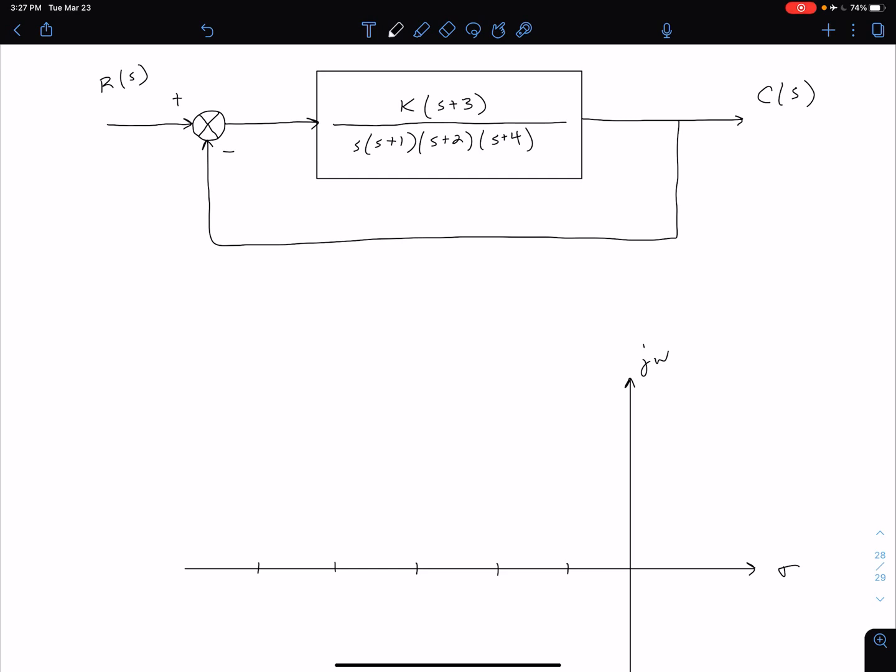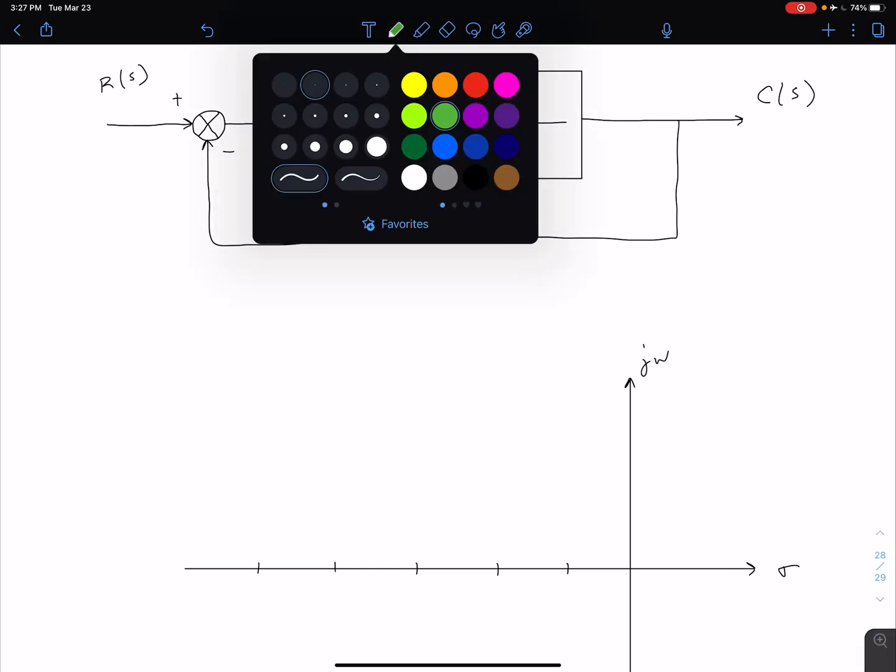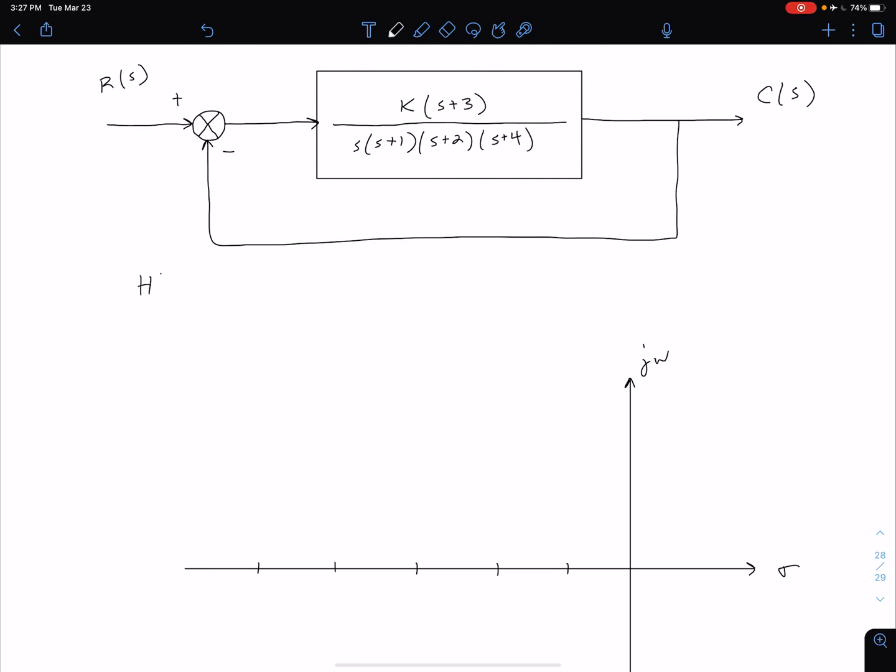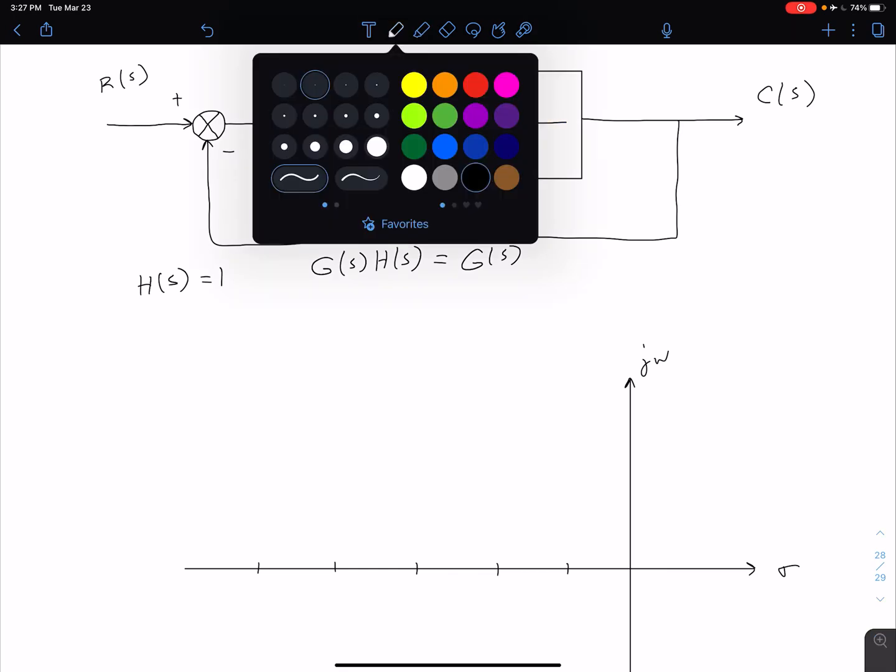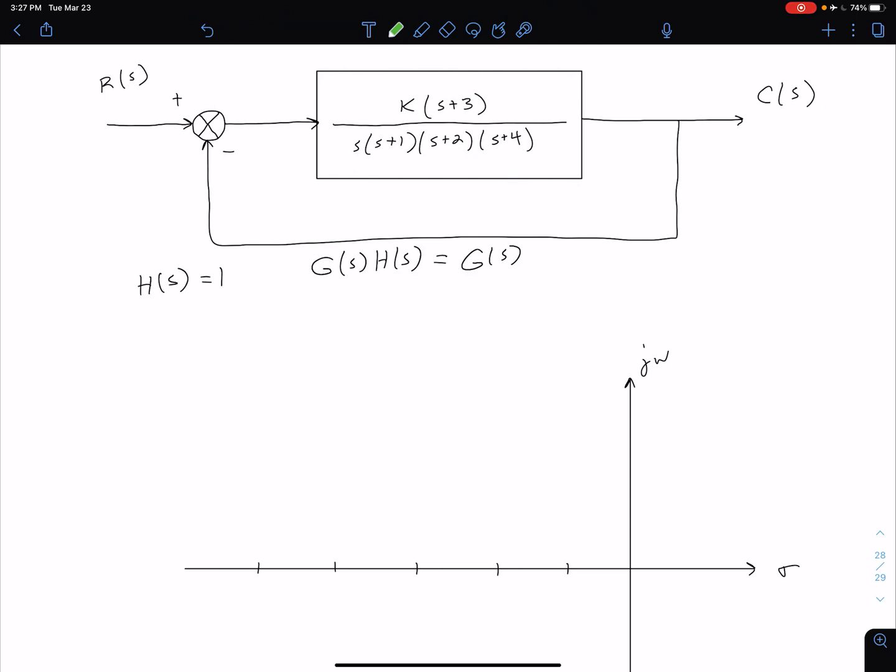What we see is we have one zero of our open loop function. Let me go back here to black. We have a unity feedback system, so H(s) is equal to 1. That means our open loop transfer function, which is G(s)H(s), is just equal to G(s). I'm looking at this function as open loop zeros and open loop poles. We have an open loop zero at negative three. So I have an open loop zero here.